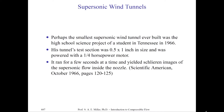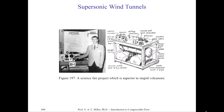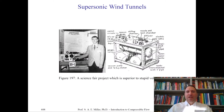Perhaps the smallest supersonic tunnel ever built was done as a high school science project by a student in Tennessee in 1966. His tunnel had a 0.5 by 1 inch cross section and was only powered by a half horsepower motor, yet he achieved a recirculating tunnel with a supersonic Mach number. This little tunnel only ran for a couple seconds but yielded beautiful Schlieren images of supersonic flow in a nozzle. This was published in Scientific America in 1966, pages 121–125. Here's the actual science student with his project and a schematic of his science fair display.